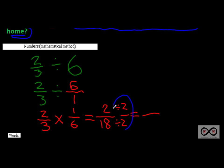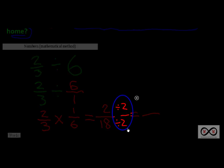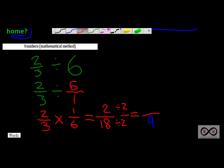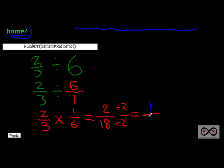Whatever you do to the numerator you must do to the denominator — you're dividing by two over two, which is really the identity property at work. Two divided by two is one, and eighteen divided by two is nine. So each person took home one-ninth of a pizza.